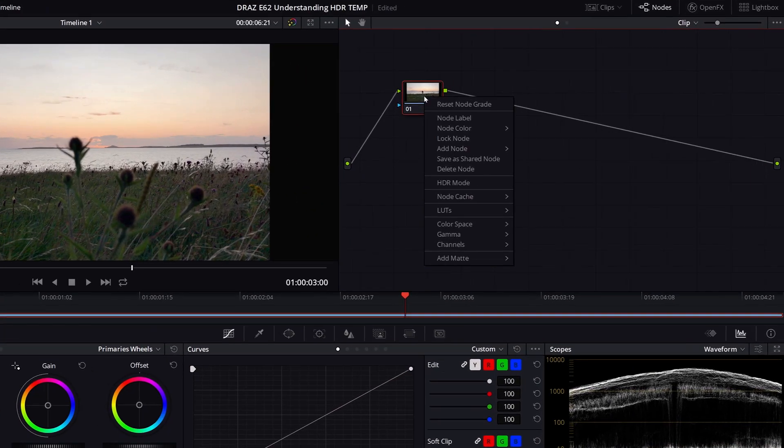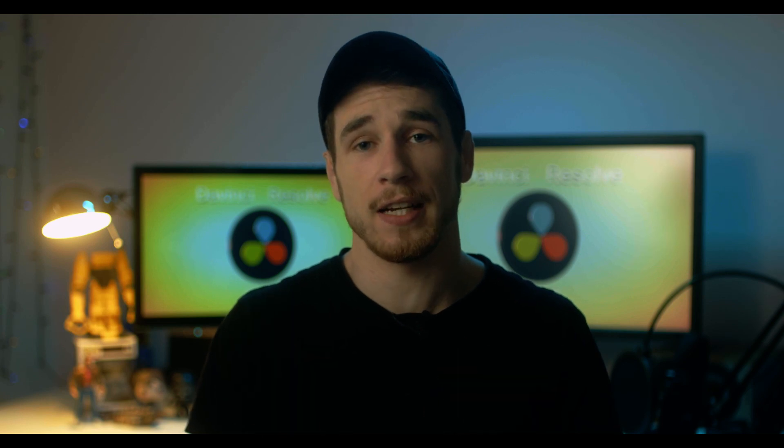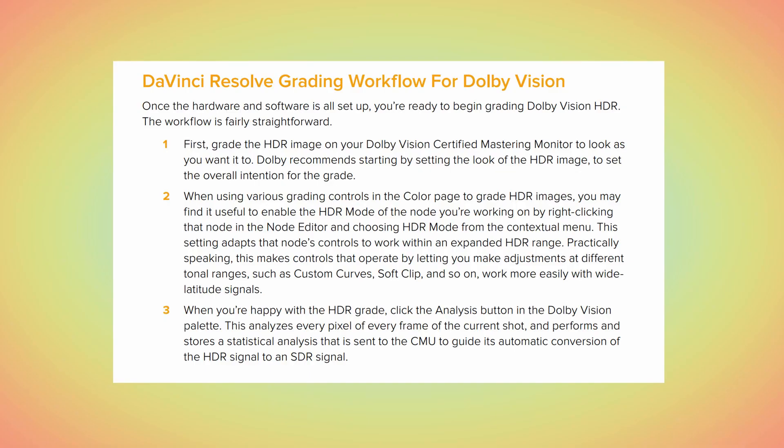The last part of our subscriber's question was the HDR mode in the nodes of DaVinci Resolve. This is accessed by right-clicking on a node and selecting HDR mode. All this does is make the adjustments you make more suited to HDR content. The manual says this setting adapts the node's controls to work within an expanded HDR range — practically speaking this makes controls like custom curves, soft clip and so on work more easily with wide latitude signals. This does not have to be turned on in order to deliver HDR content — it's simply meant to make controls work more easily with HDR values.